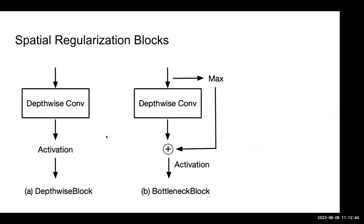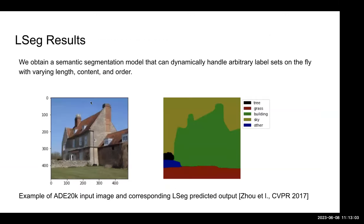We provide a general sketch of how the blocks look. We have two kinds of design: one is the depth-wise block and another is the bottleneck block. The depth-wise convolution means a different number of pure 2D convolutional operations on each channel. Finally, we obtain a semantic segmentation model that can dynamically handle arbitrary label sets on the fly with varying lengths, content, and order. Here we show an example on ADE20K — we input an image and the label set: tree, grass, building, sky, and other, and the model segments each region with very decent results.